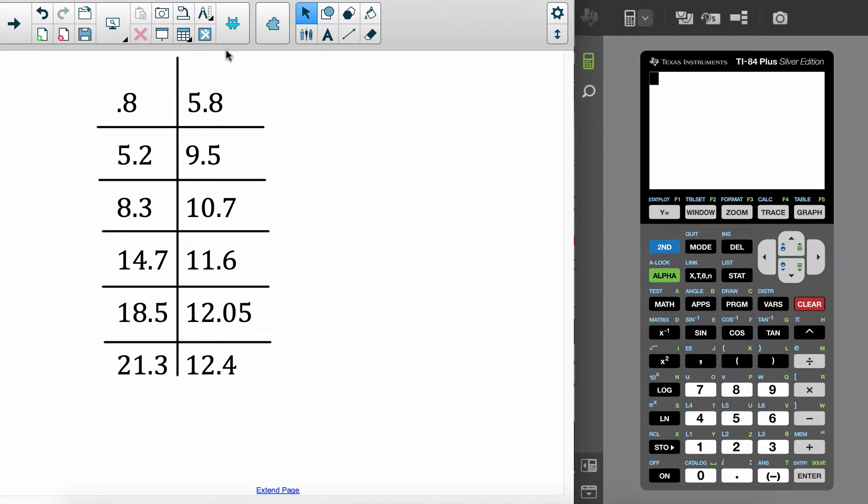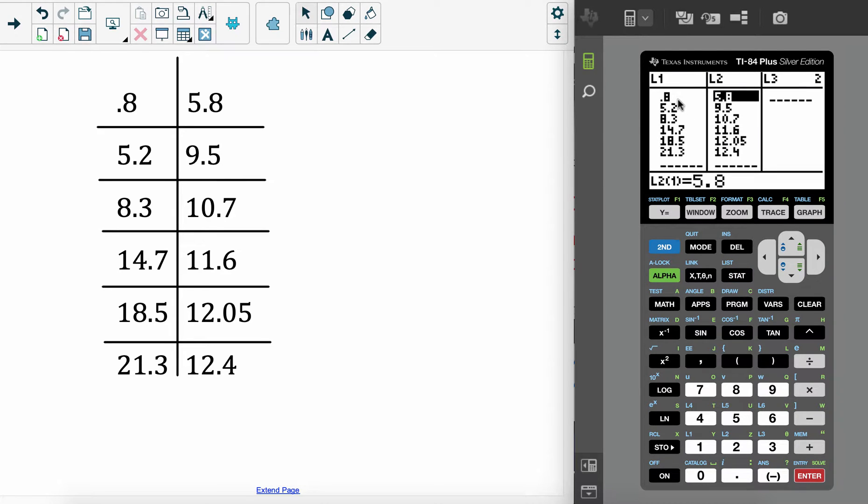So let's say we have this given data. Remember, anytime we do regression, we have to go to stat. We have to put these in. We're going to do edit right up here, stat, edit. So I'm going to press enter. Now, I put mine in. My X list is L1. My Y list is L2. If you need to clear it, you have to go up, press clear, and then come down, and it will clear it. I don't want to do that because I have my data in here already.